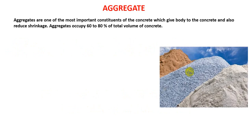First of all, we will see the aggregate. Aggregates are one of the most important constituents of concrete, which give body to concrete and also reduce sharing. That means this is an important constituent of concrete — the maximum percent of concrete consists of aggregate, and almost 60 to 80% of total volume is covered by aggregate.